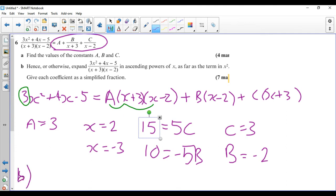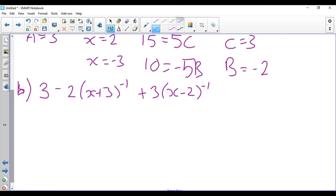So I've got 3 minus 2 lots of (x plus 3) to the minus 1. So I'm going to go straight into the index form plus 3 lots of (x minus 2) to the minus 1. So I'm using this form up here and then just bringing the x plus 3 and the x minus 2 up to the top level with a minus 1 power. So I am going to need to do my expansions on this one and this one.